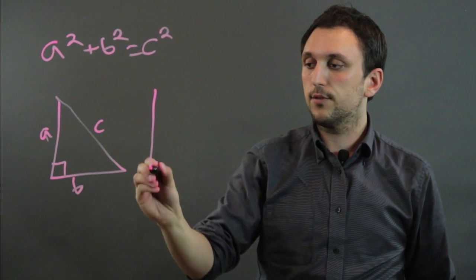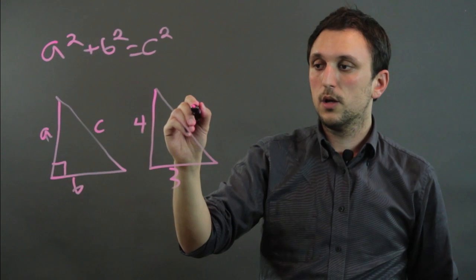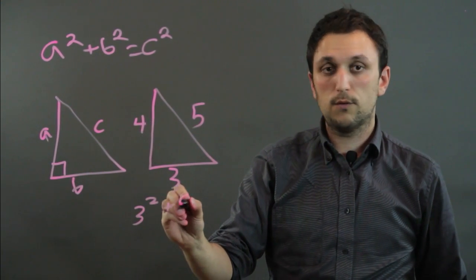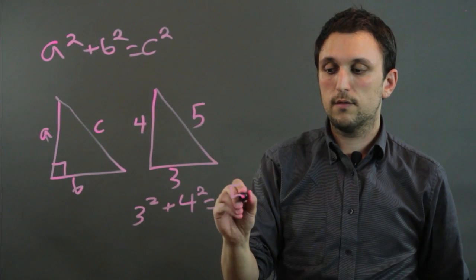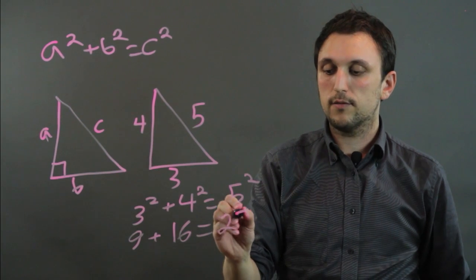So if we have four, and down here we have three, this is always going to be five, because three squared plus four squared equals five squared, or nine plus 16 equals 25.